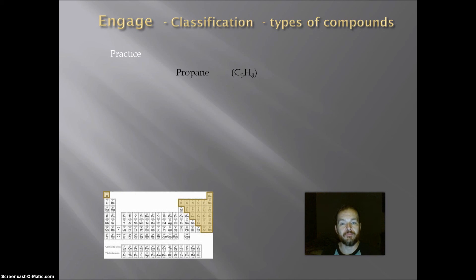And our last example, propane. Propane has a formula of C3H8. Now if I look at it, its name ends in ane. And if I look at the formula, it contains hydrogen and carbon. Both of those are indicators that our compound is organic.